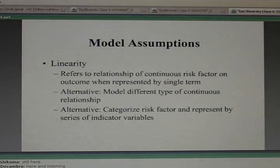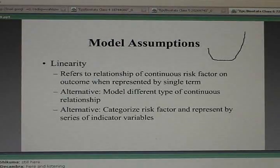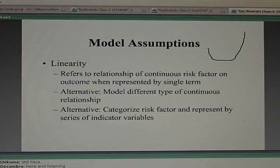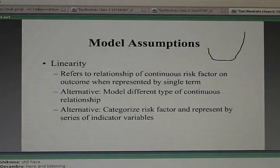This might be the relationship to describe, a curve to describe the relationship between blood pressure and your risk, say, of getting heart disease or your risk of dying. If you have very low blood pressure, your risk is high because low blood pressure, very low blood pressure is bad for you. That's hypotension. If you have very high blood pressure, your risk of getting a disease is very high. That's bad for you also. That's hypertension. In between very low blood pressure and very high blood pressure, you have normal tension. Then your risk might be lower.